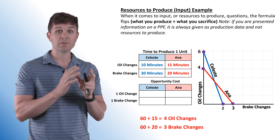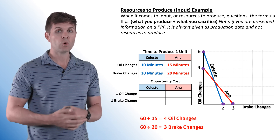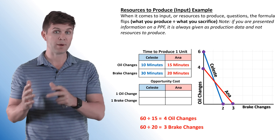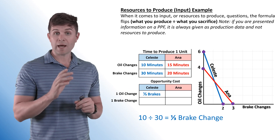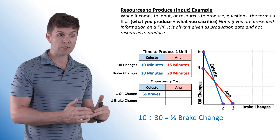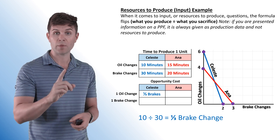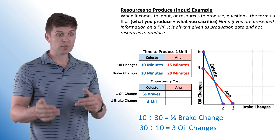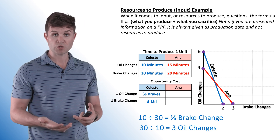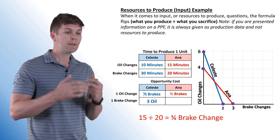The real question is the opportunity cost. Remember, this is input data — it tells us how much we need to produce one unit, so the formula flips. Instead of sacrifice divided by produce, it becomes what you produce divided by what you sacrifice. For Celeste's oil change opportunity cost: 10 minutes divided by 30 minutes gives one-third of a brake change. In the time it takes to change the oil — 10 minutes — you could only do one-third of a brake change. Inversely, in the time it takes to do one brake change, you could do three oil changes.